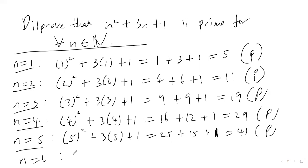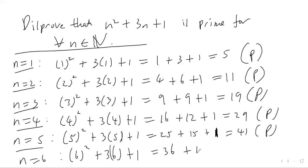Let's try n = 6: 6² + 3×6 + 1 = 36 + 18 + 1 = 55. And 55 is not prime — I'll mark this NP for not prime. We've found our counterexample!